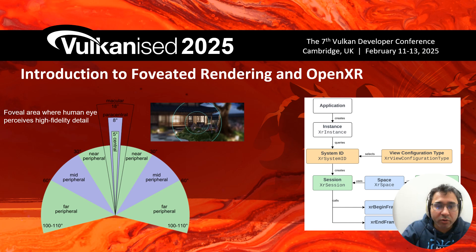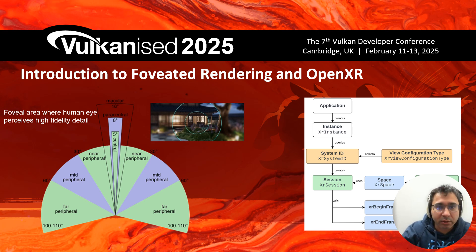The idea with foveated rendering is that if you render in such a way — as shown in the figure in the middle of the slide — where the center circle has the highest fidelity, the outer circle has a little less, and the rest of the area has even less fidelity, the user won't be able to see the difference, since their eye is focused on that narrow area. That's where you want to spend most of your GPU resources — reducing the pixel shading rate in areas not in the user's line of sight, using one fragment per pixel where they're looking versus one fragment for multiple pixels elsewhere.